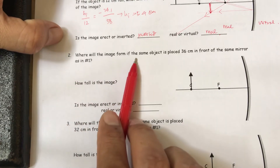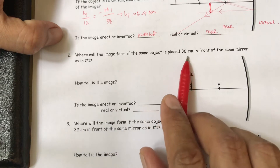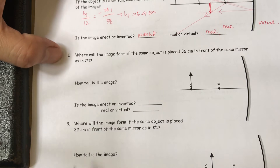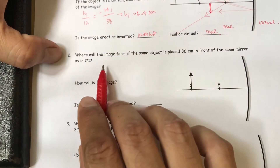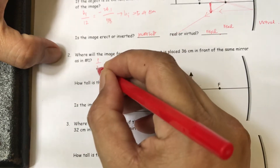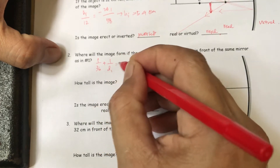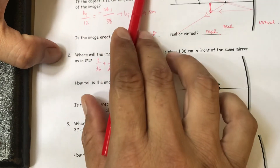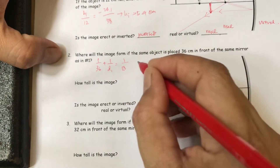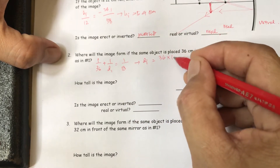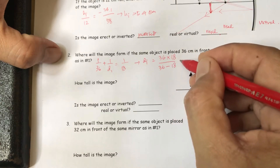Continue to number two: where will the image be if the same object is placed 36 centimeters in front of the same mirror? We use 1/d-o plus 1/d-i equals 1/f. Here d-o is 36 and focal length is 18.